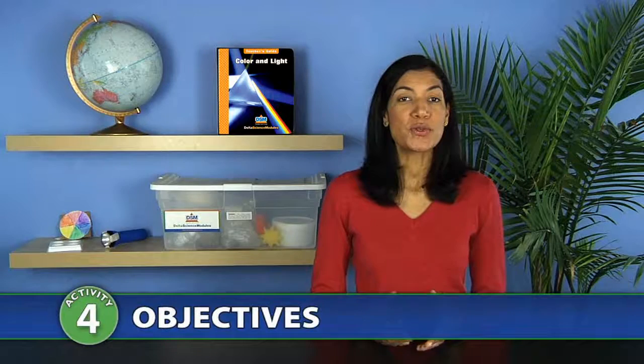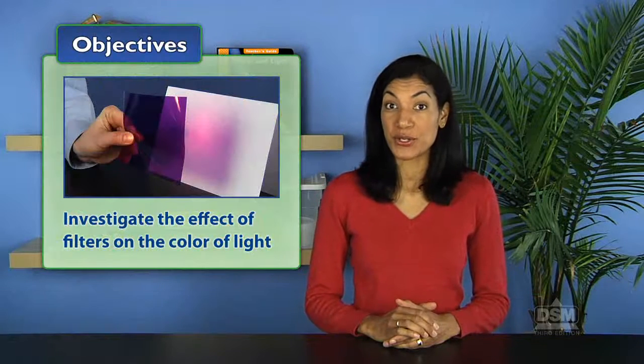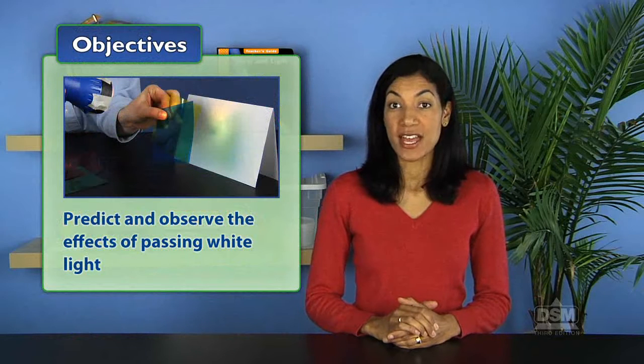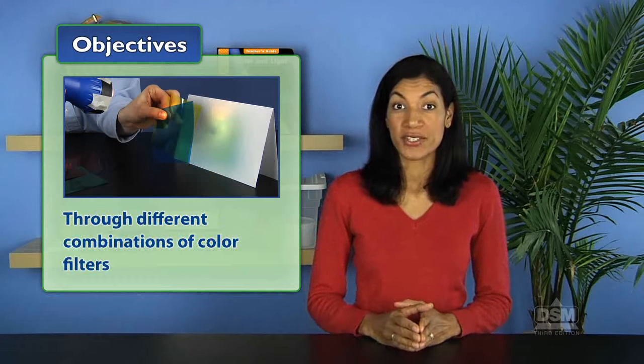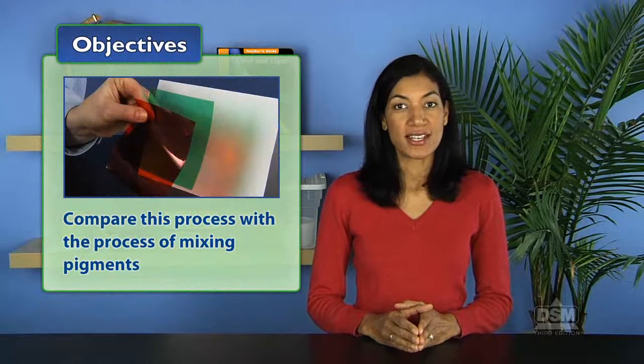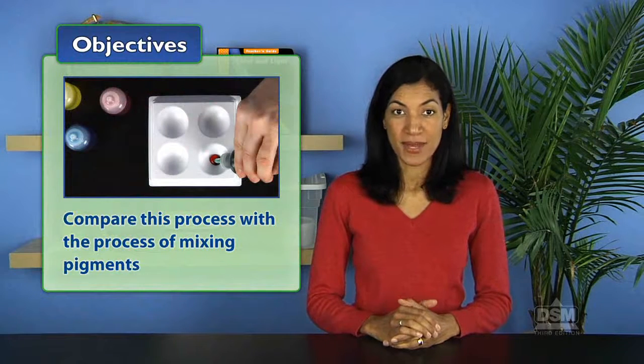In Activity 4, Color Filters and Lights, students investigate the effect of filters on the color of light. They predict and observe the effects of passing white light through different combinations of color filters and then compare this process with the process of mixing pigments.